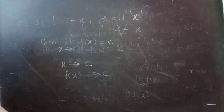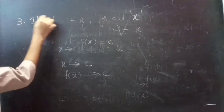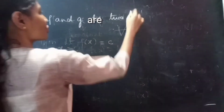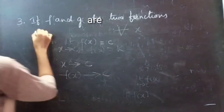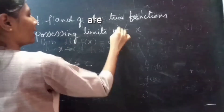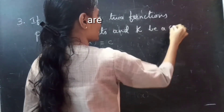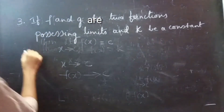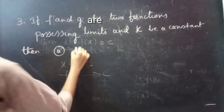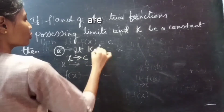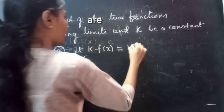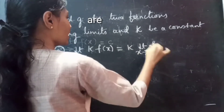Now, coming to the third result. If f and g are two functions possessing limits, and k be a constant, then: first, limit x tends to c of k into f of x equals k into limit x tends to c, f of x — since k is constant, we take it outside the limit.